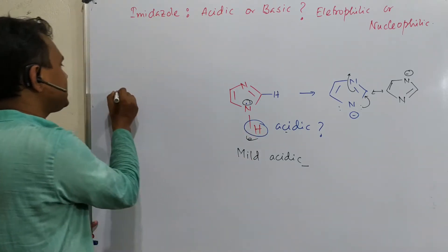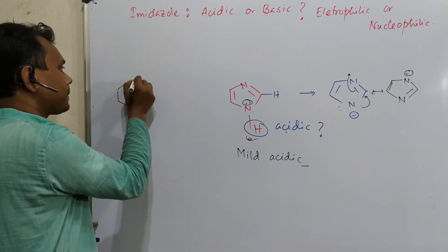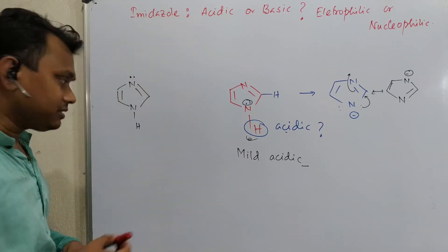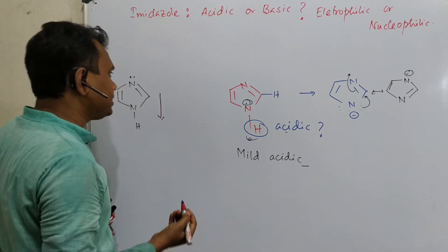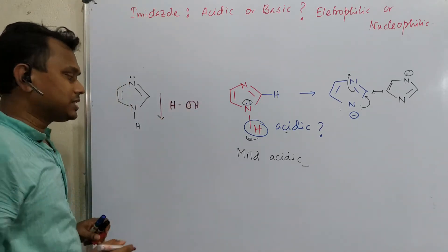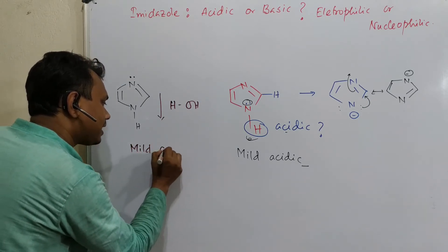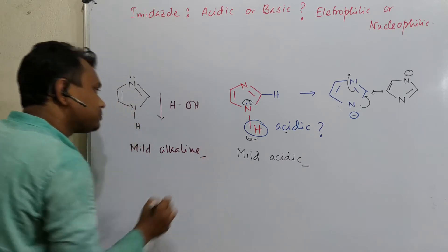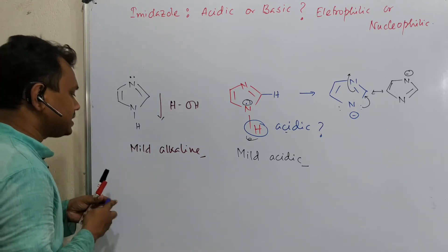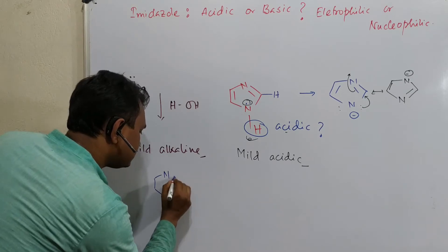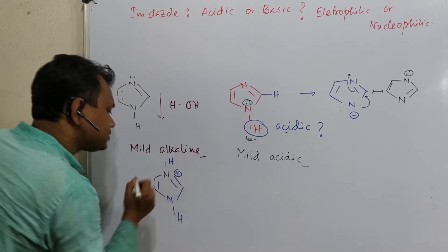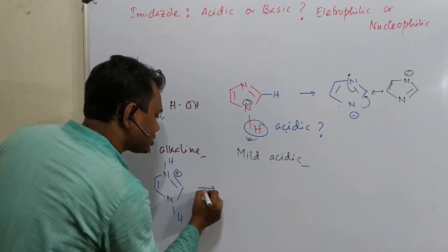Second question: is it basic? Obviously yes. Why? Because if you look at the structure of imidazole, it has a lone pair available. A base needs to have a lone pair. If you keep imidazole in water, it produces a mildly alkaline solution, meaning it can abstract a proton. After abstraction of a proton, the nitrogen gains a positive charge, and here also delocalization or resonance is possible.